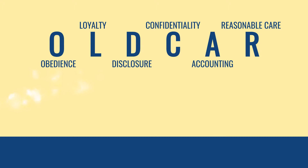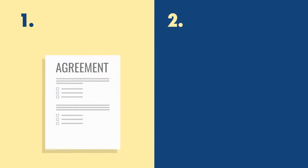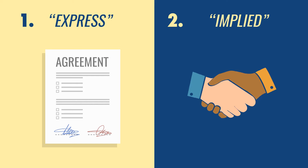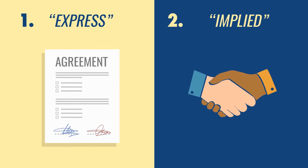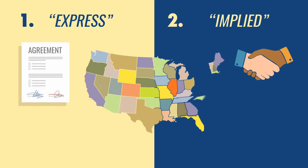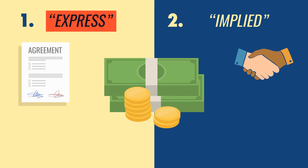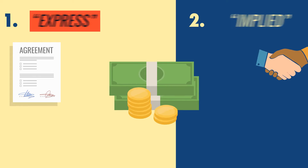In real estate, there are two things that establish agency relationships. An agreement between the parties, which creates a documented express agency, or the actions of the parties, which creates an implied type of agency. It is important to note that if the statute of frauds in your state requires real estate agency agreements to be in writing, you might need an express agency agreement to collect a commission from your client. Now let's look at the different ways of forming an agency relationship.